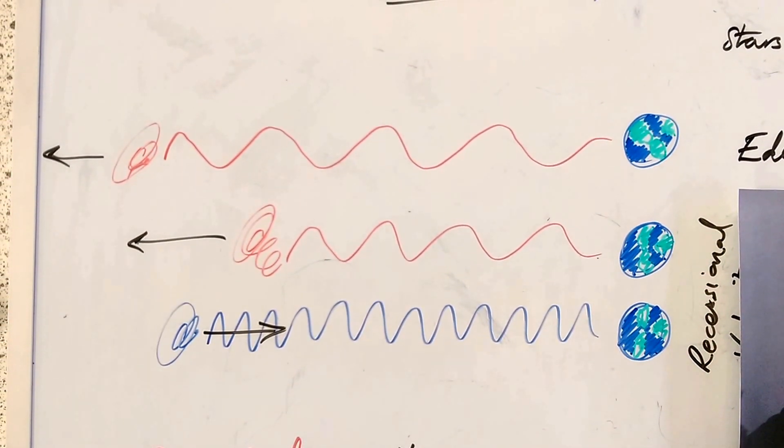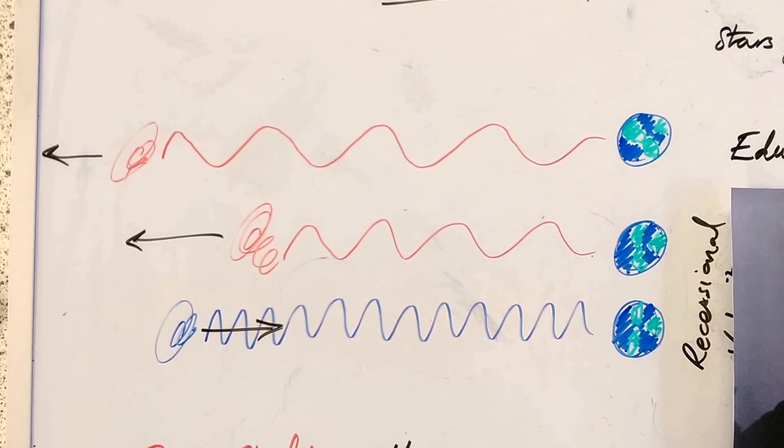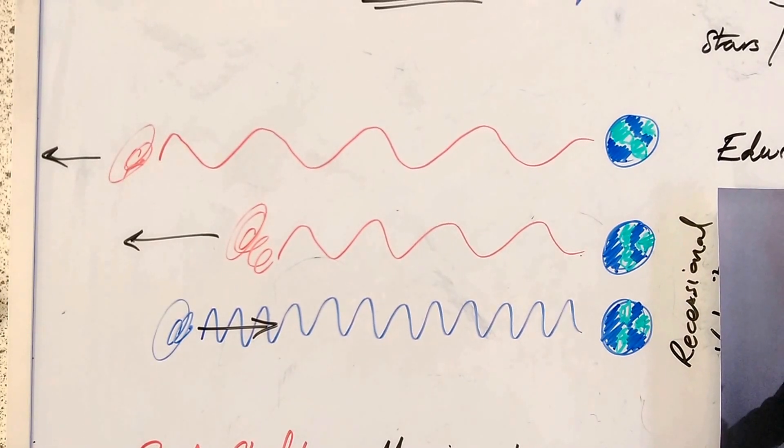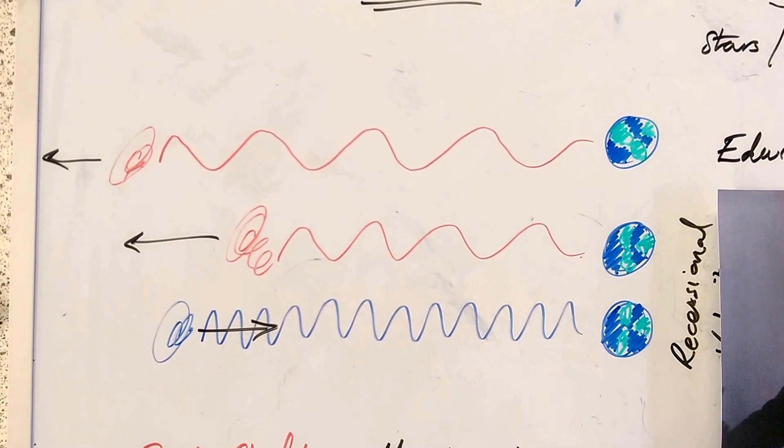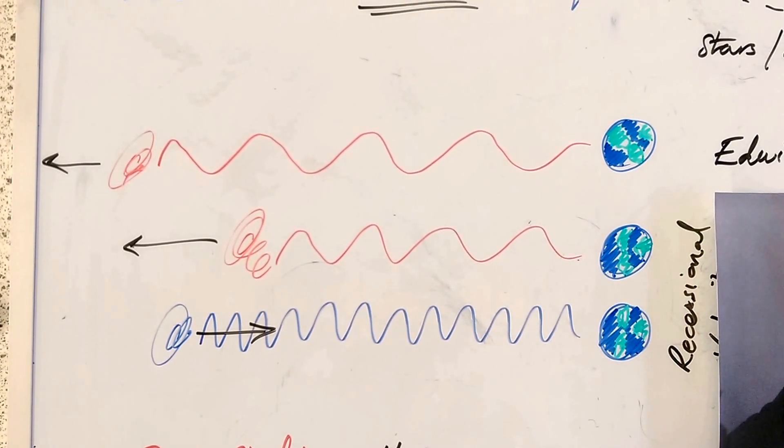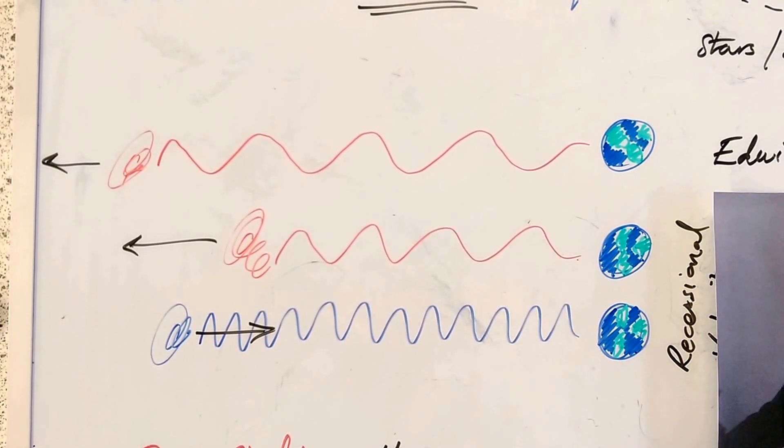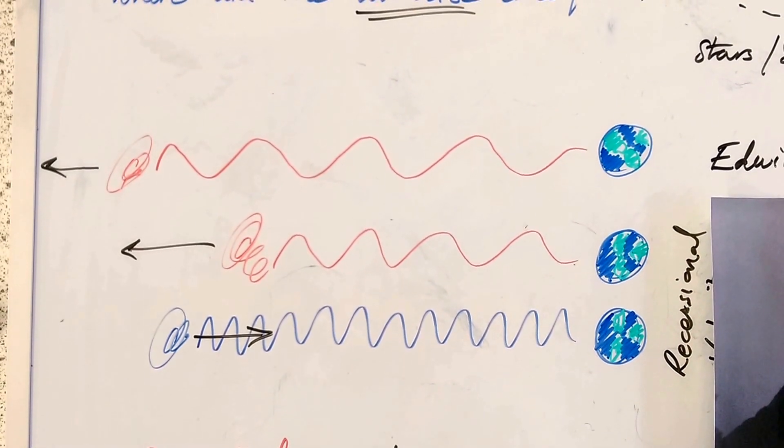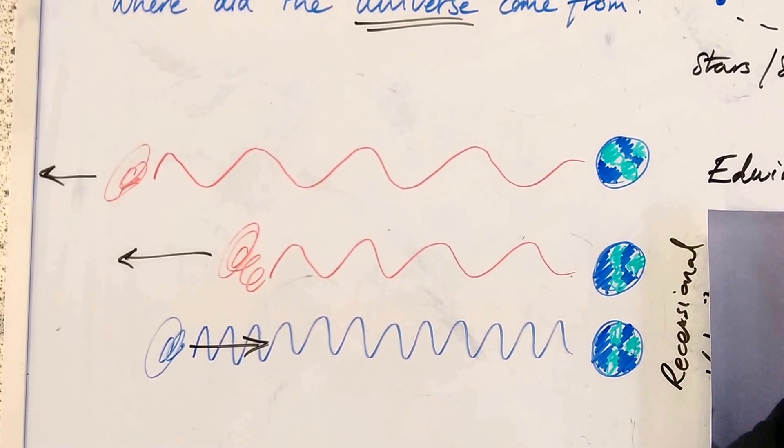He found that galaxies that were moving away from us, the light was red-shifted. That means, because the galaxy is moving away, the light has a visibly longer wavelength and is therefore closer to the red end of the spectrum. If it's moving towards us, that galaxy, it would be blue-shifted.